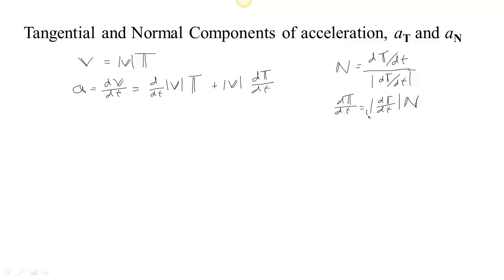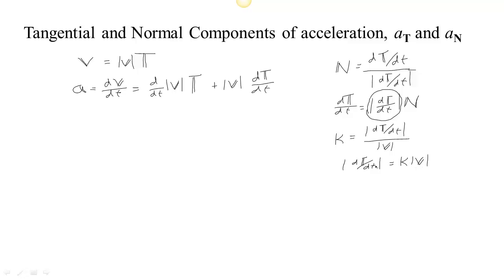This is not the first time we've seen the length of the derivative of the tangent with respect to time — we've also seen it in our formula for computing kappa. When we computed kappa, we took the length of the derivative of the tangent with respect to time and divided by the speed. So the length of the derivative of the unit tangent with respect to time equals kappa times the speed. Therefore, the derivative of the unit tangent with respect to time equals kappa times the speed times the unit normal N.